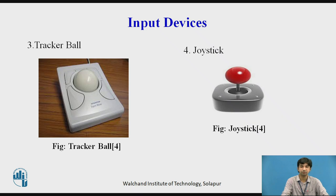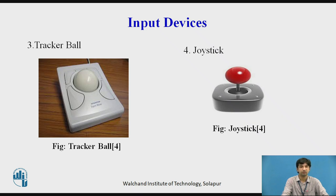The third input device is the tracker ball. The tracker ball is positioned next to the keyboard; you change the orientation of the ball, and that changes the position of the cursor on the screen. Joystick: when you move the stick in either direction, the resistors fixed at the bottom change resistance, and the position can be seen on the screen.